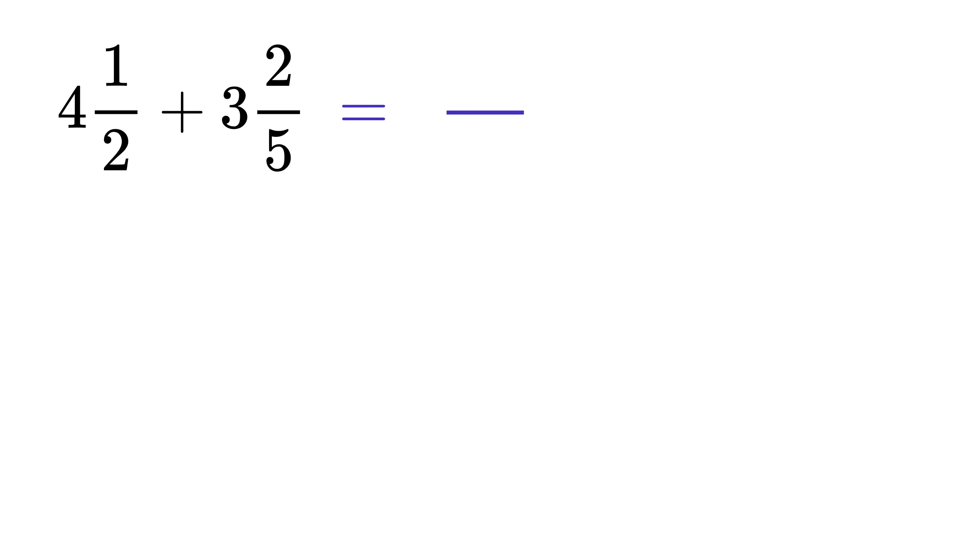2 times 5 is 10, and so put a 10 here. Then cross multiply: 5 times 1 is 5, and 2 times 2 is 4. 5 plus 4 gives 9. Put it here in the numerator. Then simply add these two whole numbers to get 3 plus 4 equals 7.